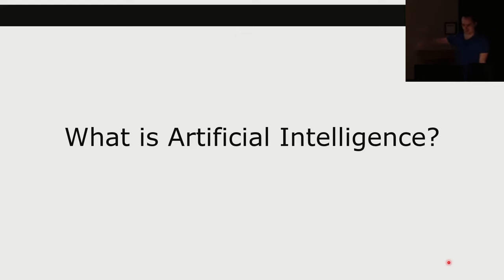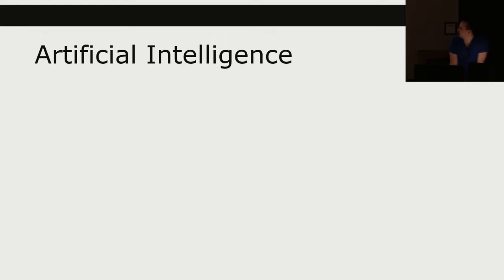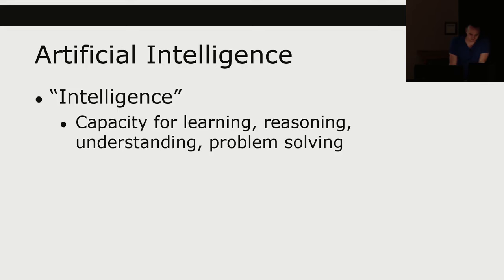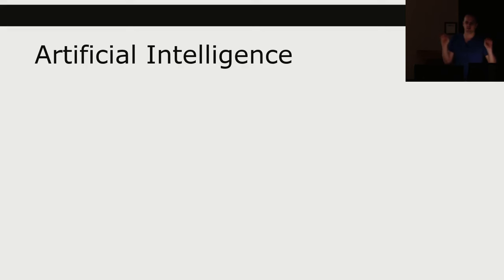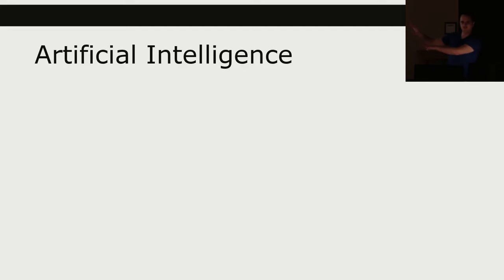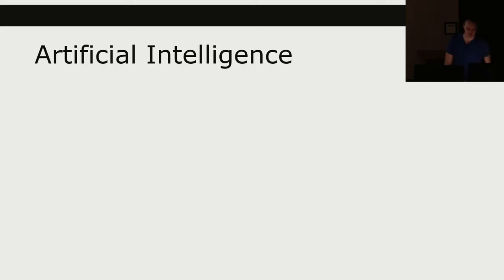So now on to what the whole course is about. What is artificial intelligence? If you ask ten AI researchers, you'll probably get eight different answers. It has become such an overloaded term, especially in industry marketing, that basically everybody does AI all the time and the term doesn't mean anything anymore. From an academic perspective, intelligence may mean the capacity for learning, reasoning, understanding, or problem-solving.